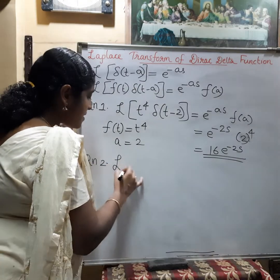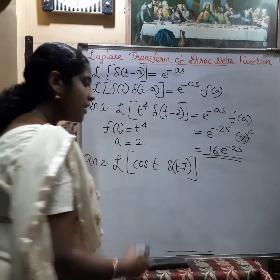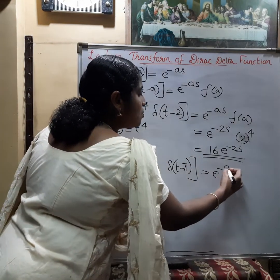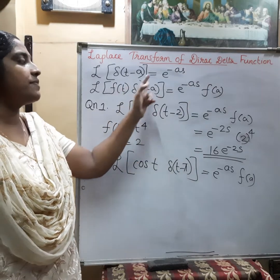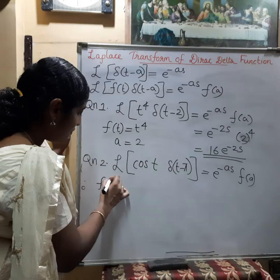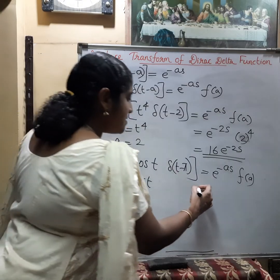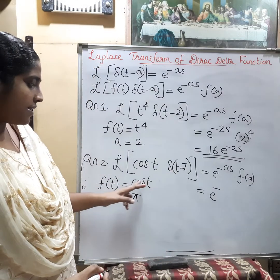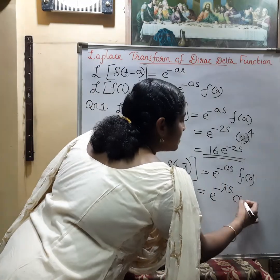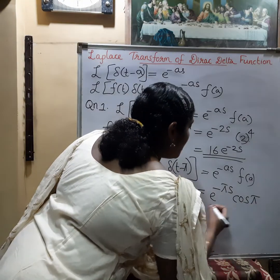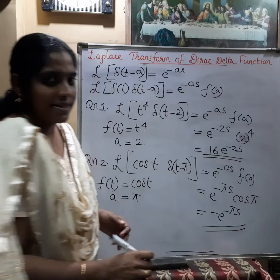Question 2: Find the Laplace transform of cos(t)·δ(t−π). Using the formula, the Laplace transform of f(t)·δ(t−a) = e^(−as)·f(a). Here, f(t) = cos(t) and a = π. So the answer is e^(−πs)·f(π) = e^(−πs)·cos(π). Since cos(π) = −1, the answer is −e^(−πs).